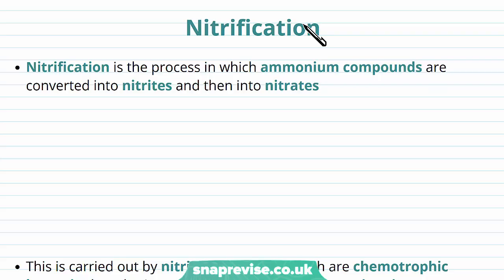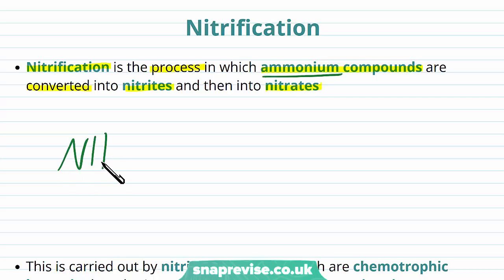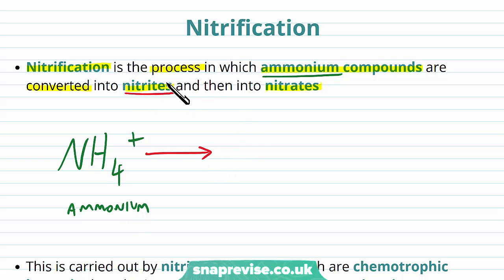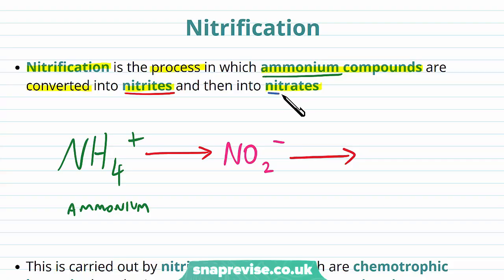Nitrification is another important process in the cycle. Nitrification is the process where ammonium compounds are converted into nitrites and then into nitrates. It can be confusing to remember all of these different chemicals. Ammonium compounds are anything which has NH4+. This is being converted first into nitrites, which are NO2-, and then these get converted to nitrates, which are NO3-.